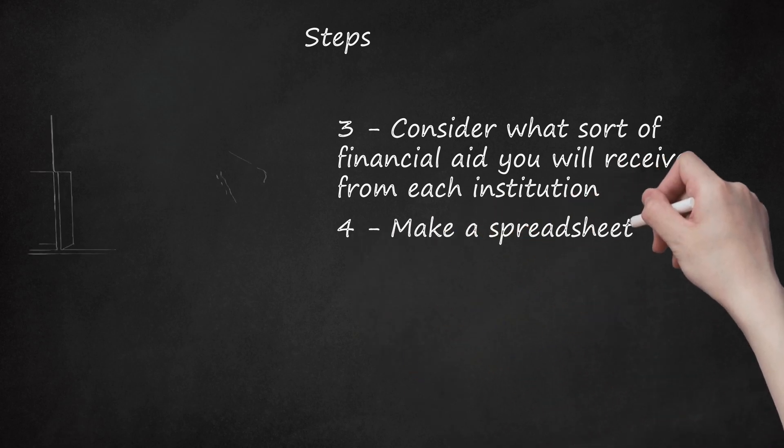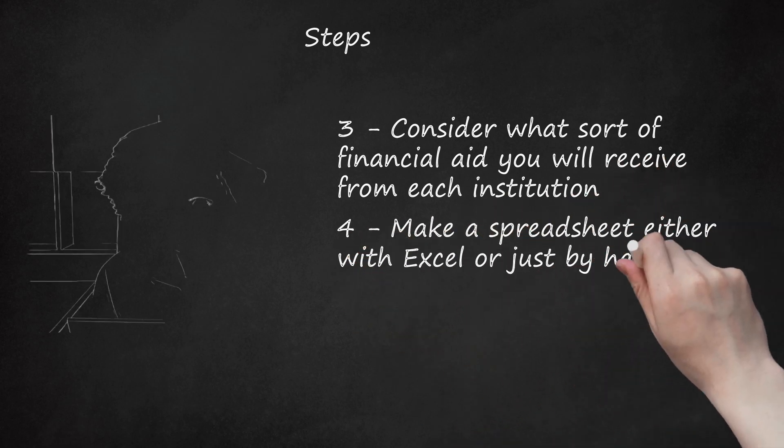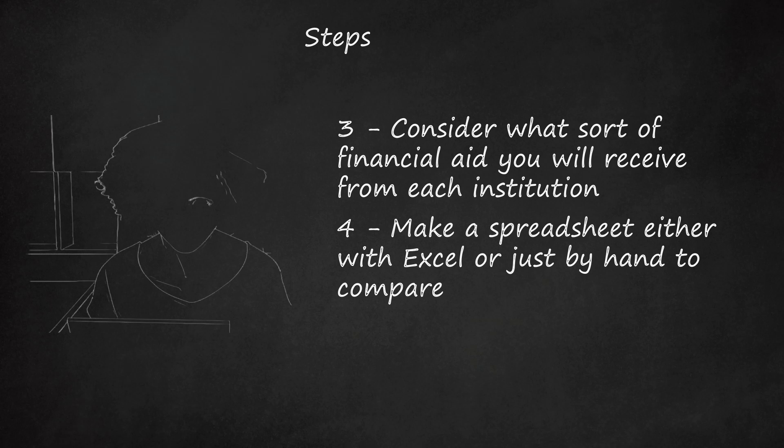4. Make a spreadsheet either with Excel or just by hand to compare. Using a program like Excel will give you the benefit of a built-in calculator however. The total will be calculated by adding together tuition with room and board as well as average textbook price and then subtracting any aid you will receive from the institution. Create a column for each college. Create a row for tuition, room and board, financial aid, cost of textbooks, and total cost.